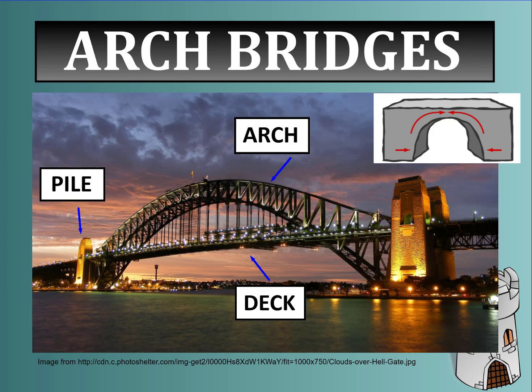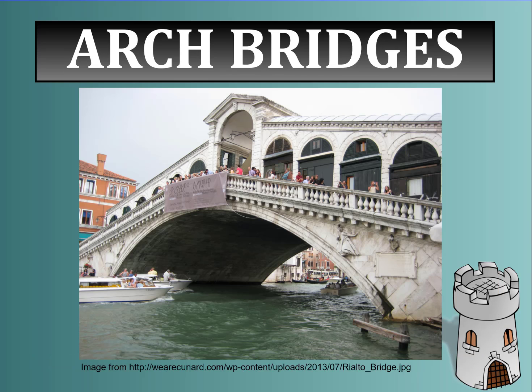An arch bridge has three main components: a pile, the arch itself, and the deck. This bridge resists compression — it compresses at the top of the arch and allows the rest of the span to be held up by the arch. Here's another famous arch bridge called the Rialto Bridge in Venice.